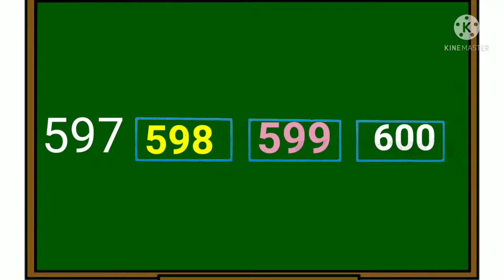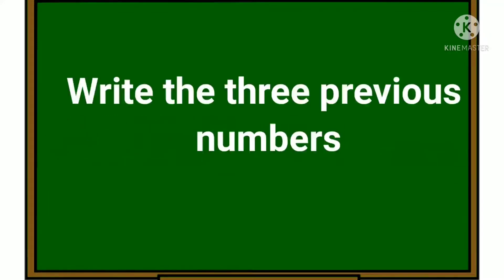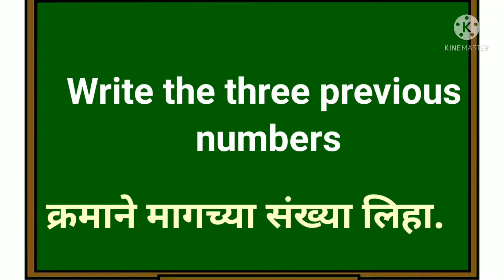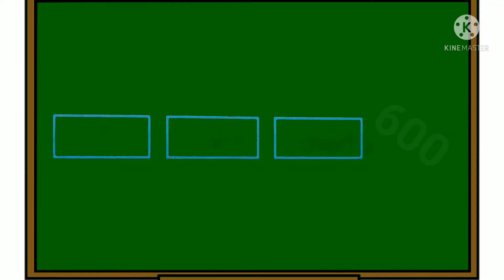Now see the next question — write the three previous numbers. The number which is given here is six hundred. What is the previous number of six hundred?